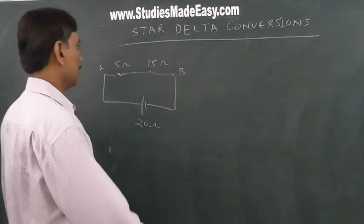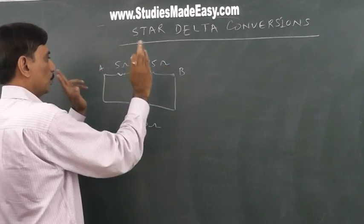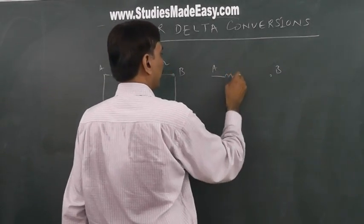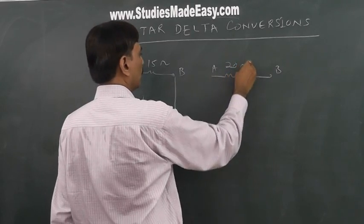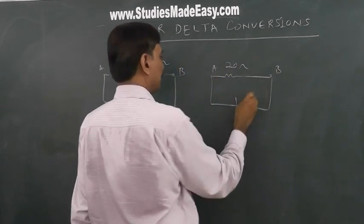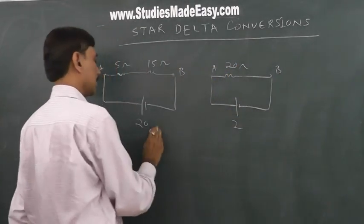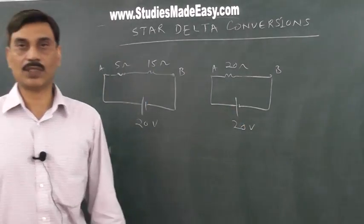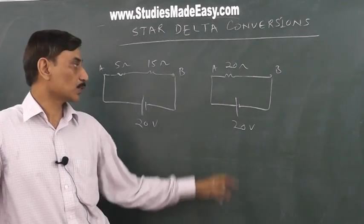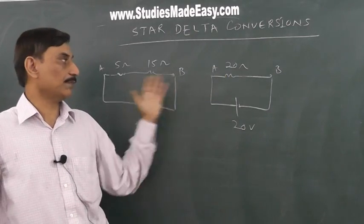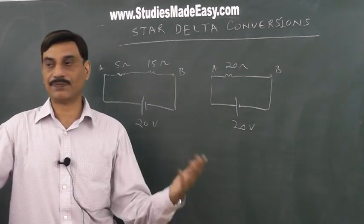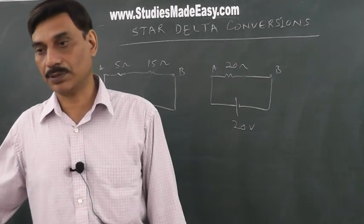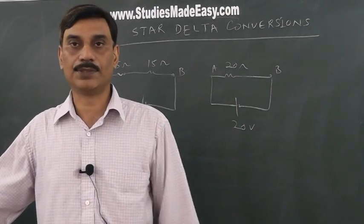Equivalent resistance means: if instead of these two resistors I remove them and between points A and B fix a resistance of 20 ohm, from the same battery — this is 20 volts — it will draw the same current, that is 20 by 21 amperes. You can refer to the derivations from your CBSE or school, or the earlier lectures.